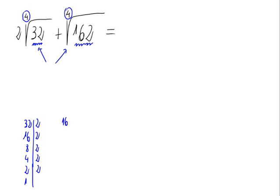And 162 factorized would be: divided by 2 is 81, divided by 3 is 27, divided by 3 again is 9, divided by 3 is 3, and by 3 again that is 1.